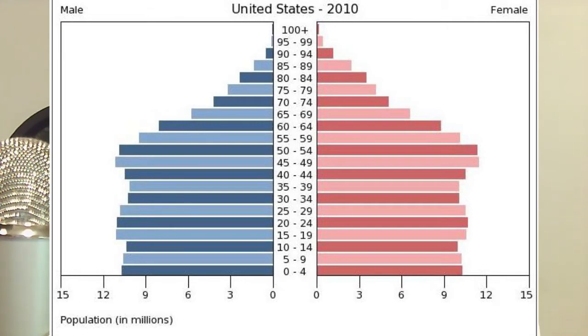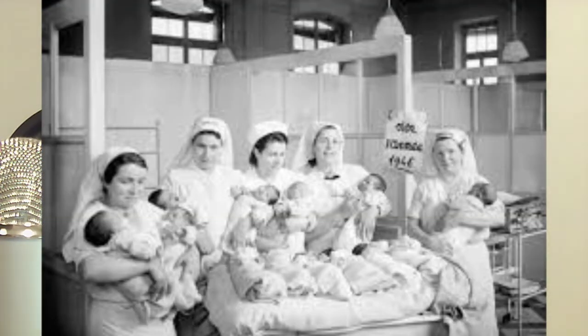A cohort refers to populations of various age categories in a population pyramid. This is important because it can indicate what stage a country is in the demographic transition model. In US population, we talked about baby booms and baby busts. A baby boom refers to people born between 1946 and 1964 — post-World War II, when many babies were born because people were happy the war had ended.